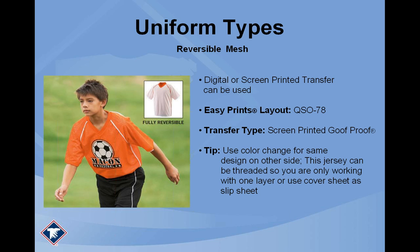Reversible mesh can be tricky because sometimes one color side is polyester and the other is nylon — it has happened. Make sure you know what fabric each side is. The Makin Arsenal uses reversible polyester mesh, so we can do digital or screen print. They use two colors so we went with screen print. For pressing reversible jerseys, the easiest strategy is threading — opening up the jersey and dressing just one layer onto the platen. This way you press one side at a time without the adhesive or ink sticking to the other layers.